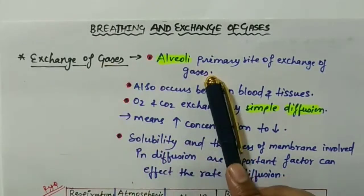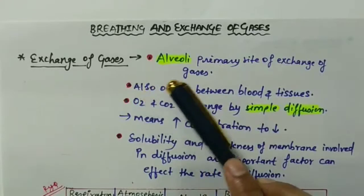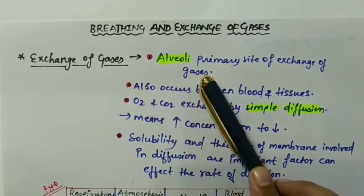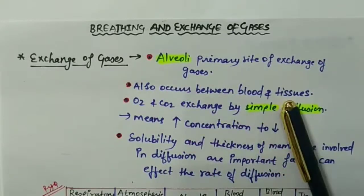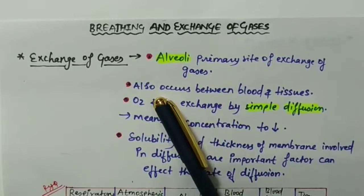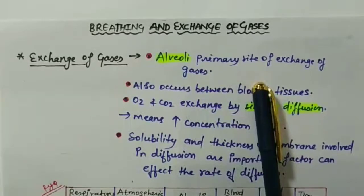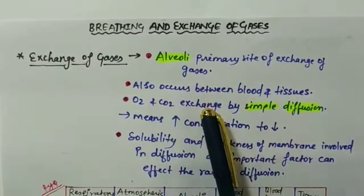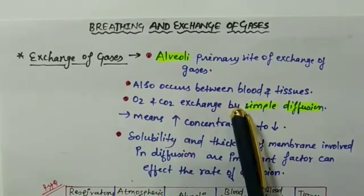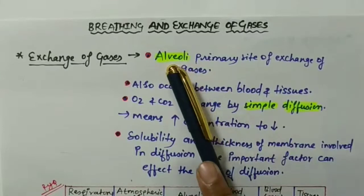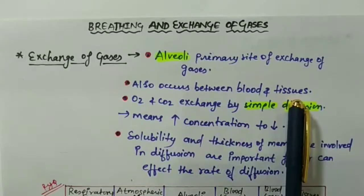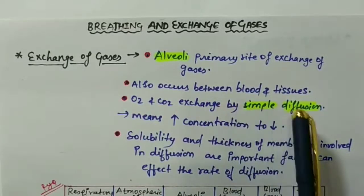Let's start — what is the exchange of gases and how it occurs. First of all, there are two gases in our body. The exchange takes place at the blood and tissue level. The alveoli is the primary site of the exchange of gases, as stated by NCERT. The exchange of gases also occurs between blood and tissue. The exchange of O2 and CO2 is by simple diffusion.